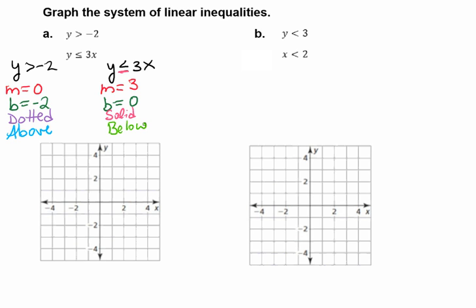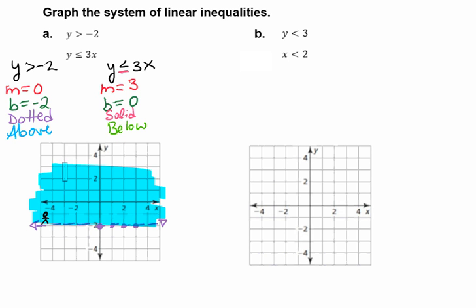Now we'll graph each inequality separately. I'm going to graph our first inequality in purple. I have a b value of negative 2, which I'll graph. Then I need the slope, which was 0. So I'm going to move up 0 and over 1. I have enough to create my dashed line. I'll draw my dotted line and shade above — shading the sky area above the line.